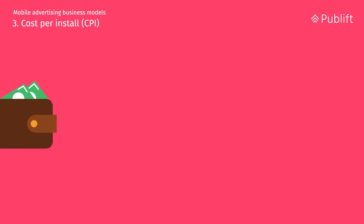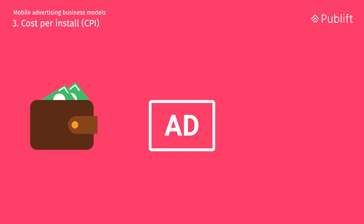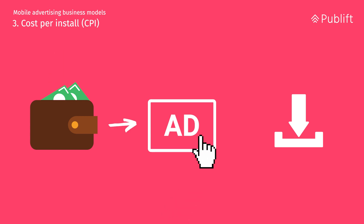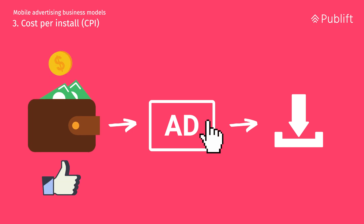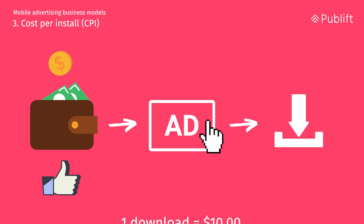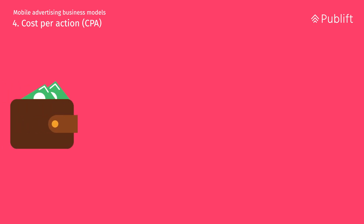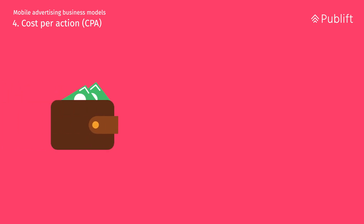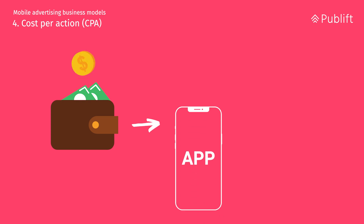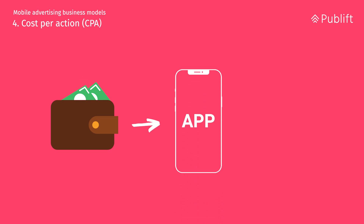Cost per install, or CPI. Functioning in a similar way to CPC, the cost per install model only charges advertisers when a click on an ad results in an actual mobile app download. A model such as this is far more beneficial to advertisers than publishers, as it shows them the price they pay to acquire new customers. Cost per action, or CPA: with CPA, an advertiser is charged for specific actions users take inside an app that is advertised on a mobile network — think in-app purchases, subscriptions, those sorts of things.